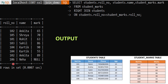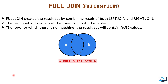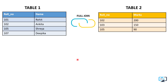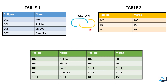Moving towards our next join - full join. It is very simple to understand: full join is the combination of left and right join. It gives us all the rows from both tables. If any column value doesn't satisfy the condition, its value will be null. One important thing: MySQL does not support full join, but in Oracle we can write the query like this, combining all records from student and student_marks tables.